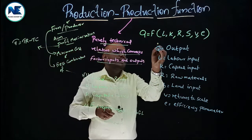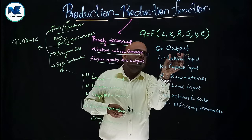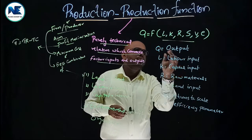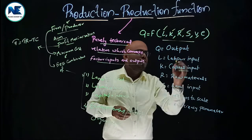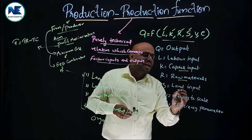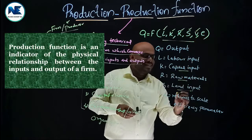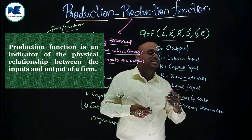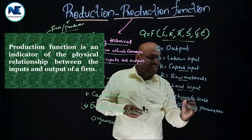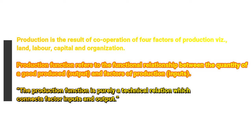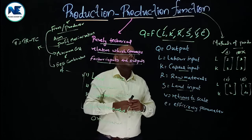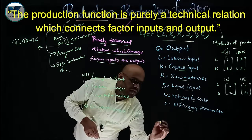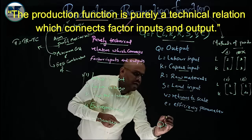For example, we can say Q — the level of output — is a function of L (labor input) and K (capital input or raw materials or land input). Here, V represents returns to scale, which is the long-run analysis of production, and E represents the efficiency parameter. This is the production function — Q = f(L, K, R, S, V, E) — the most important function in production theory.